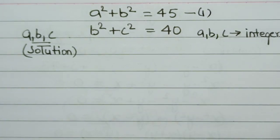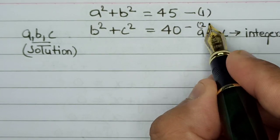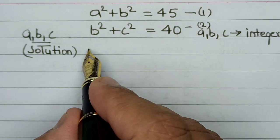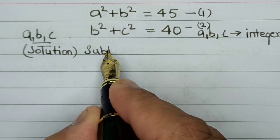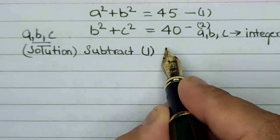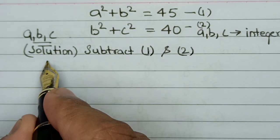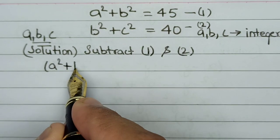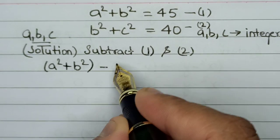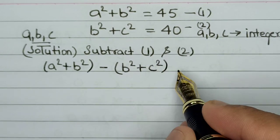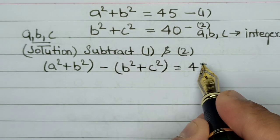So let us suppose that this is equation number one and this is equation number two. Let us subtract equation one and two. This will be (a² + b²) - (b² + c²) = 45 - 40.